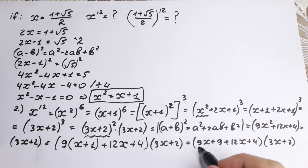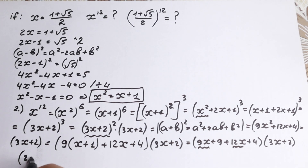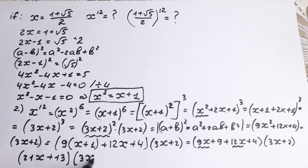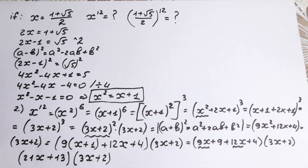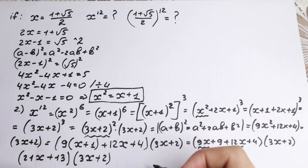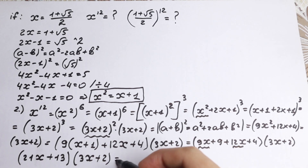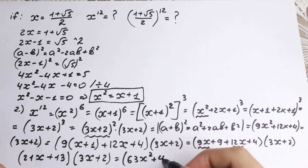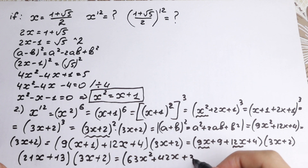Let's simplify: 9x plus 12x gives 21x, and 9 plus 4 gives 13, so we have (21x plus 13) times (3x plus 2). After multiplying out all steps, x to the 12th power equals the product of these two parentheses. Multiplying gives us 63x squared plus 42x plus 39x plus 26.